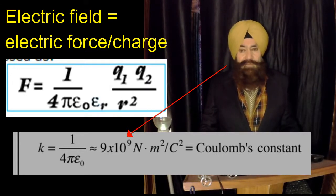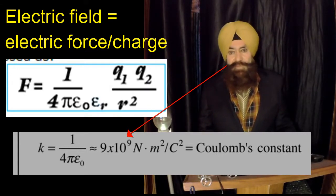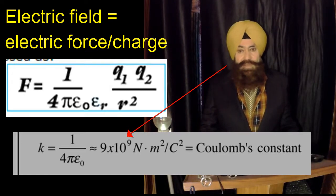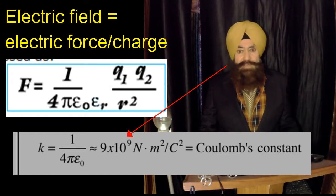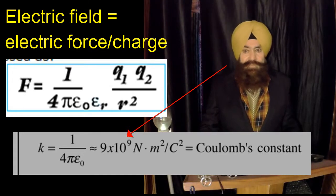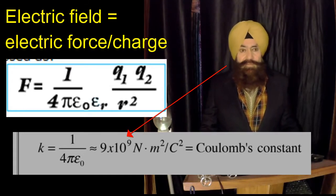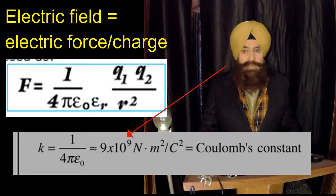So the electrical force is relatively very large. In vacuum, the reciprocal of the dielectric constant is about 9 billions Newton meter square upon coulomb square.